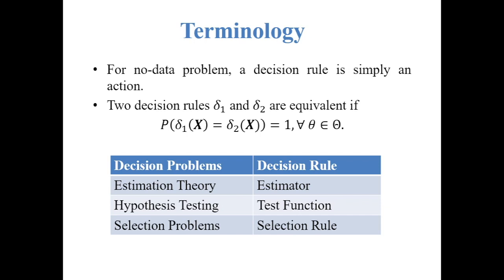For the no-data problem, a decision rule is simply an action. Two decision rules delta_1 and delta_2 are equivalent if the probability of delta_1 equal to delta_2 is equal to 1 — that means delta_1 and delta_2 are equal almost everywhere.